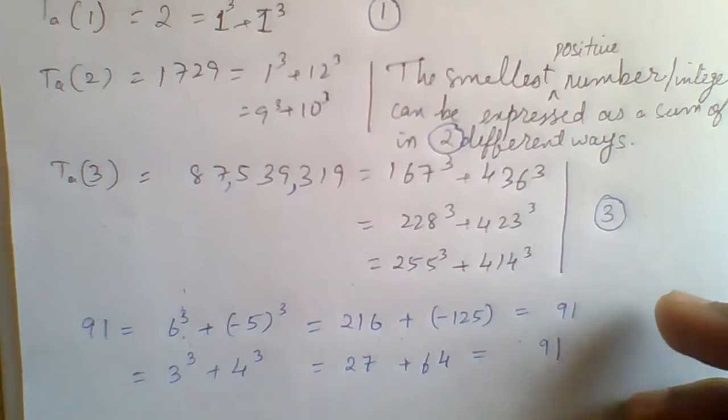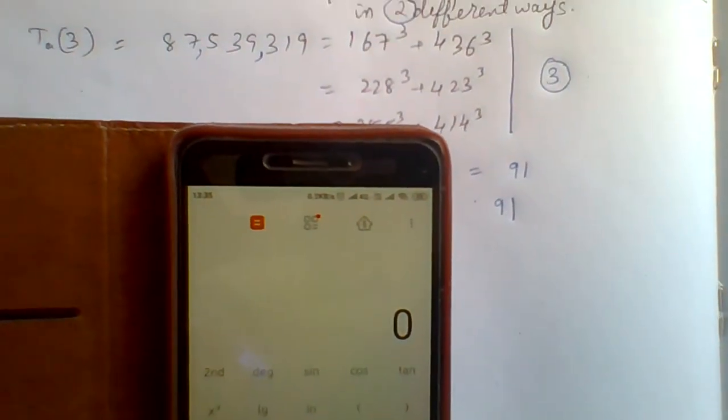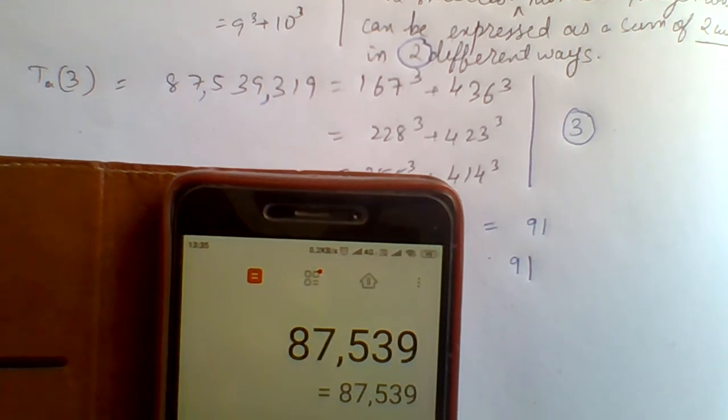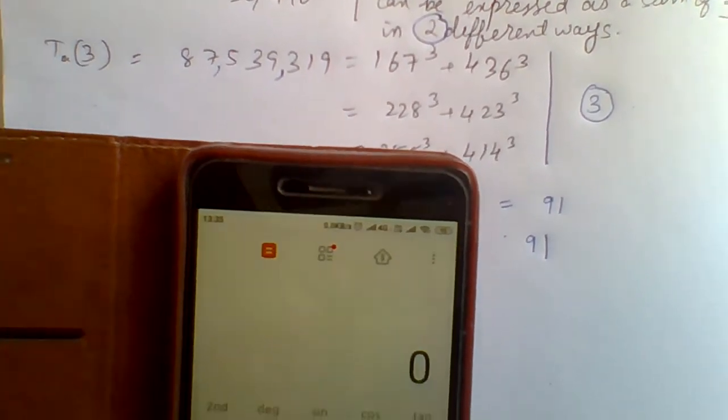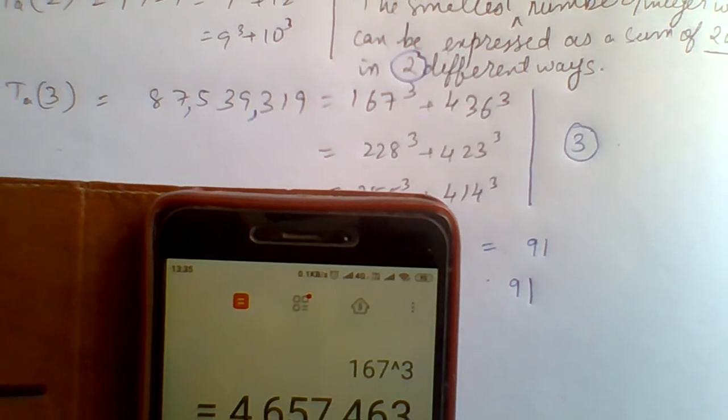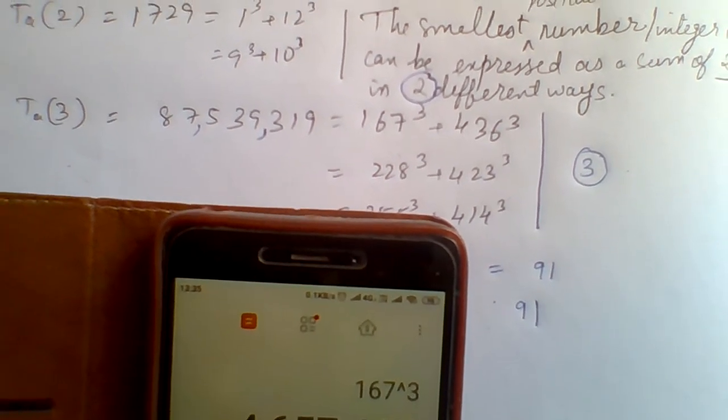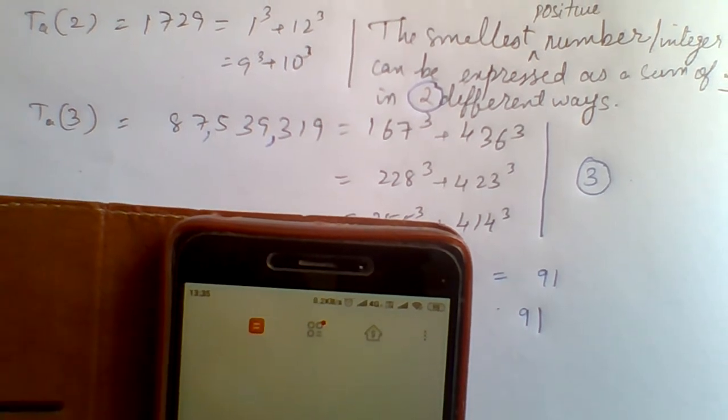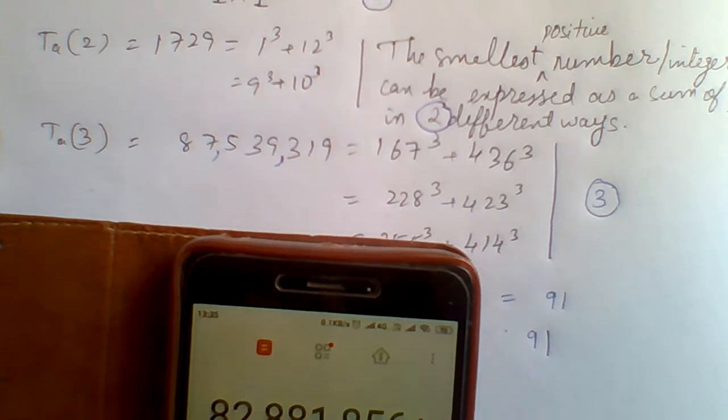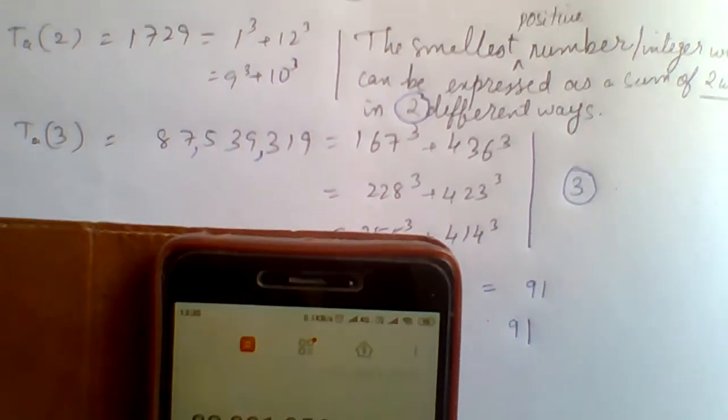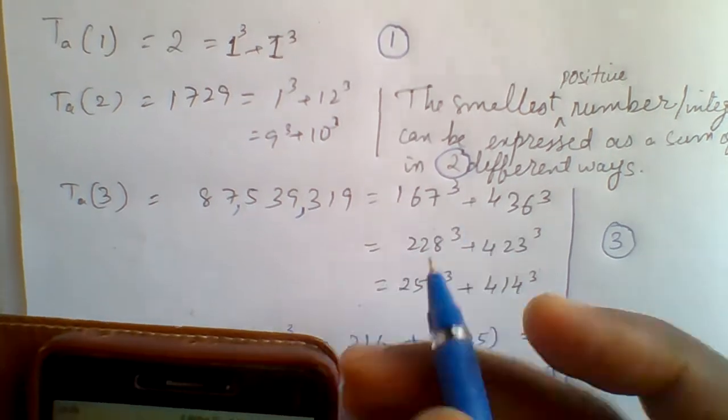Just to check, I have got a calculator here, so we are going to check for 87,539,319. We are going to write 167 to the power three, this is our first result. Next we are going to write 436 to the power three, that is our second result. When we add these two we will get the same result, and we have verified this first one.